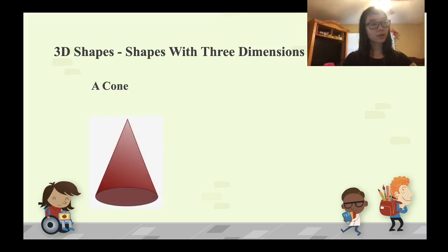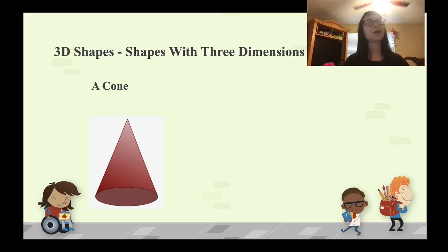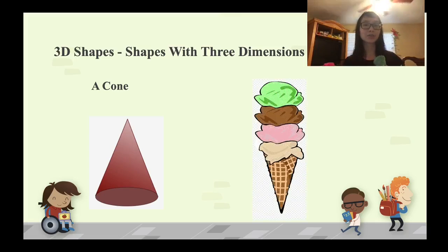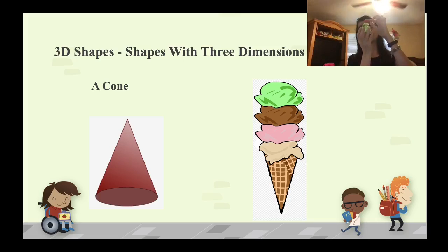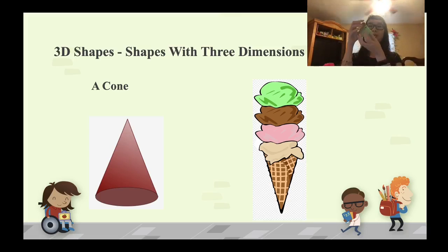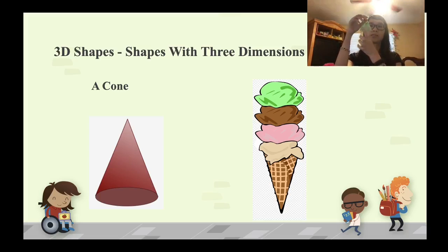The next 3D shape we learn is a cone. We've seen it somewhere before — it's like an ice cream! How do we identify a cone? It has one base that is a circle, and the top is called the apex. It looks like a shuttlecock — it has an apex and a circular base. We call it a cone.